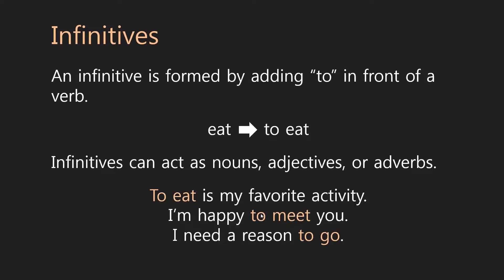Okay. So, here are some examples. Just like before I said eating is my favorite activity, I can also say to eat is my favorite activity. To eat is my favorite activity. To eat is a noun. It's a thing. It's the thing that is my favorite activity. Okay. Or, how about I'm happy. Why am I happy? I'm happy to meet you. So, to meet here is an adverb describing why I'm happy. Finally, I have an example of an infinitive as an adjective. I need a reason. Okay. And to go describes the noun reason. I need a reason to go.